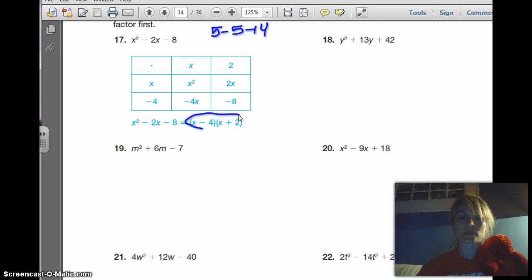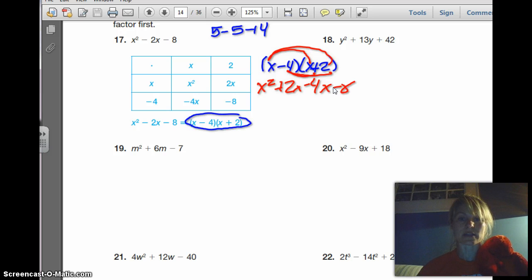So last week and today we finished up the activity where when given factored form, most of us did the distributive property where you had x times x, so that was x squared, and then we did x times 2, that's 2x. Then we have negative 4 times x, which is negative 4x, and then we multiplied negative 4 times 2, which was negative 8.